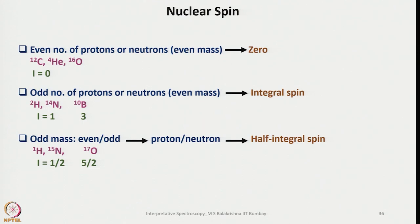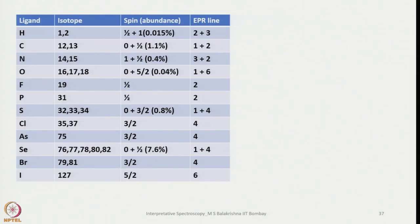Nuclei with an even number of protons and neutrons have I = 0 and show no EPR signals — for example ¹²C, ⁴He, and ¹⁶O. Nuclei with an odd number of protons or neutrons — for example ²H, ¹⁴N, ¹⁰B — have I = 1, while ¹⁰B has I = 3, and ¹¹B has I = 3/2. These are half-integral or integral spin nuclei. A table listing main group element isotopes, their spin values, natural abundances, and expected number of EPR lines is presented.